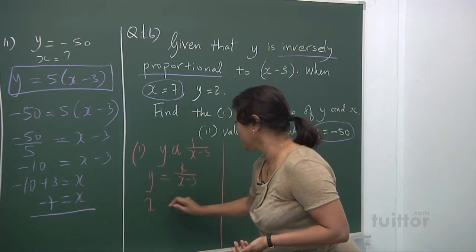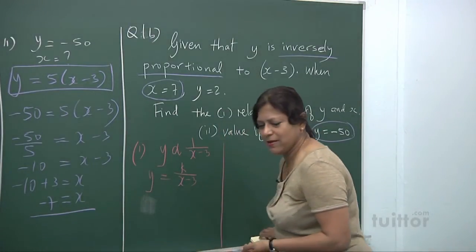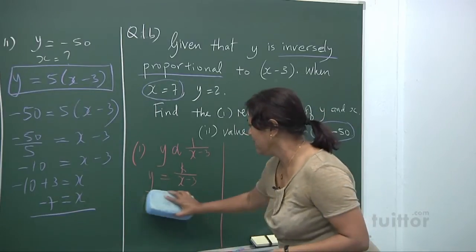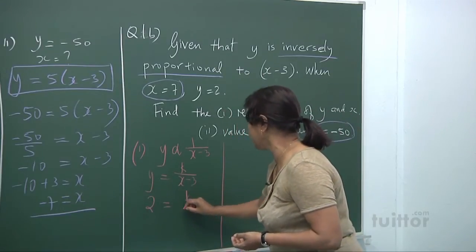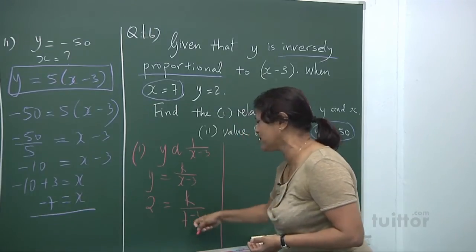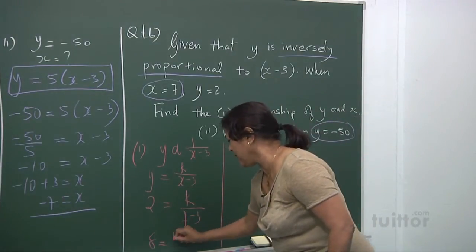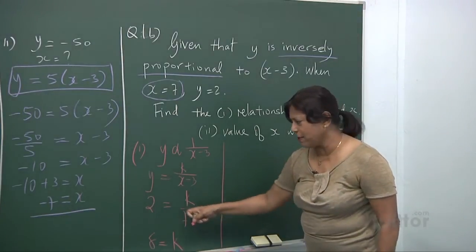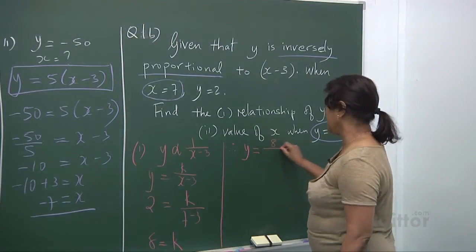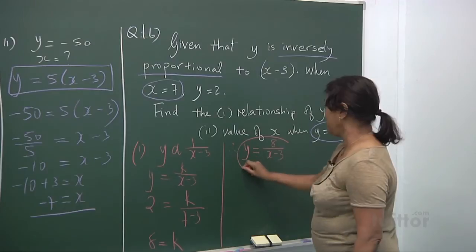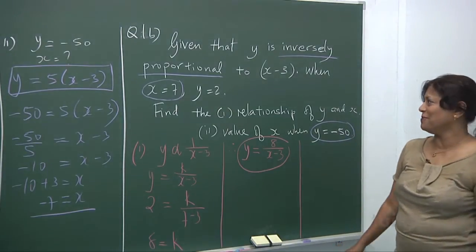So you put here y, you're 2. And x, you're 7. Let me write my 2 properly. I don't like this 2. You know numbers when you write, you've got to write neatly and clearly. Alright? Let me tell you. Presentation of your answers are very important. And then your x is a 7. 7 minus 3. What's 7 minus 3? You get a 4. Bring your 4 up here. 4 times 2 is 8. So therefore, you divide, you bring it up times. Therefore, y is equal to, k is 8, 8 over (x - 3). That's the relationship of y and x. Alright? It's an inverse relationship.